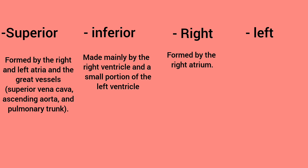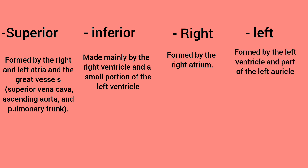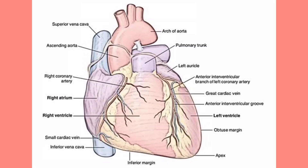The left border is formed by the left ventricle and part of the left auricle. The apex of the heart, which is the tip of the left ventricle, is formed by the end of the inferior border and the lower part of the left border.